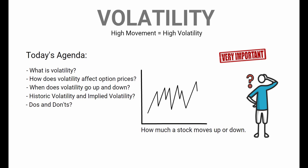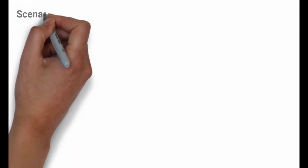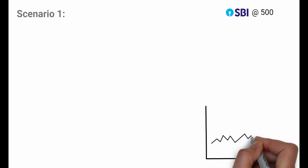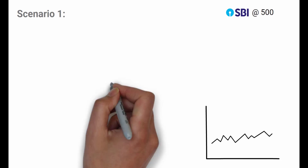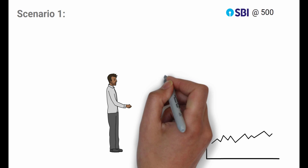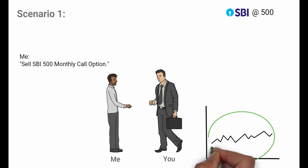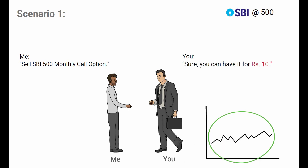Let's discuss Scenario 1. SBI is trading at 500 rupees and the market is very peaceful — every day SBI is moving less than half a percent up or down, no big movements, the stock is stuck in a tight range. If you ask me to sell you the SBI 500 monthly call option, knowing there's not much movement expected, I would sell it at 10 rupees. The same applies for the put option — if the stock won't move down much, you'd sell the 500 strike put at the same 10 rupees.